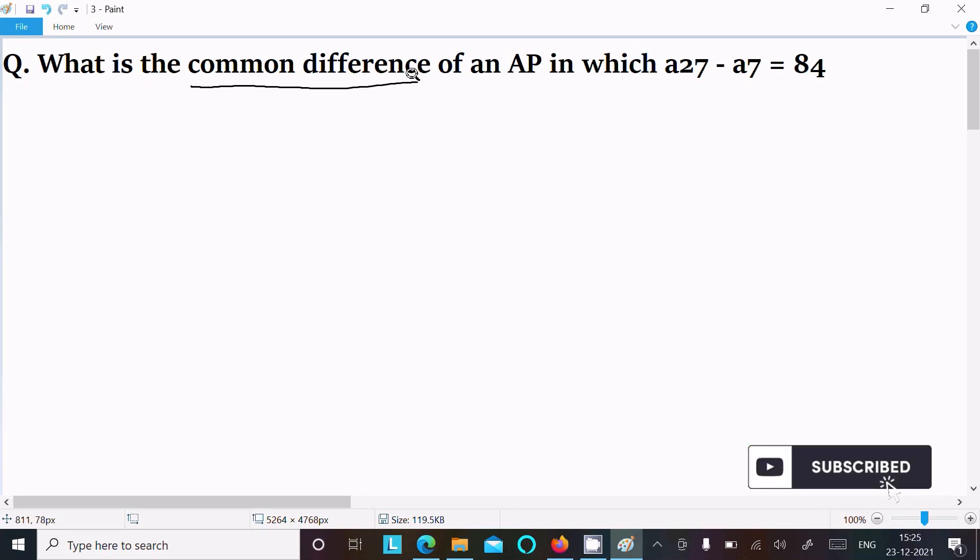In this video lecture I am going to find the common difference of an AP where a27 minus a7 equals 84. So let's see the answer. First here writing the nth term.